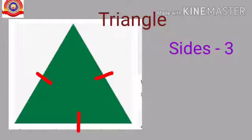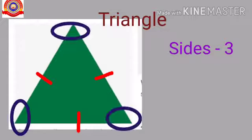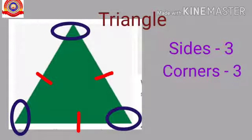Listen children, how many corners are there in a triangle? Yes, one, two, three. So, a triangle has three corners.